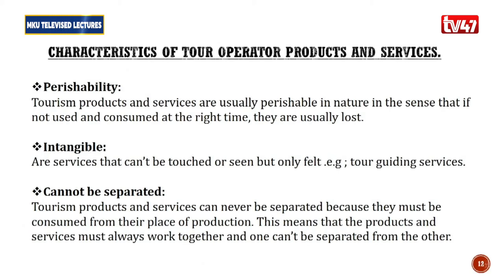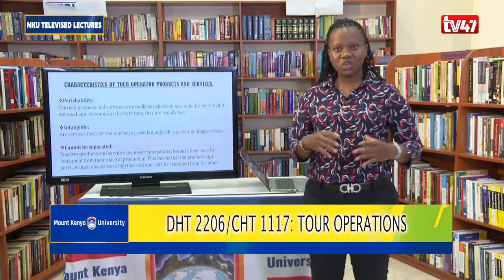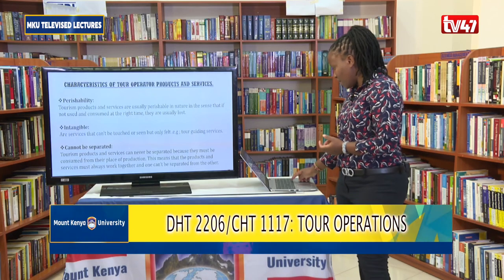Characteristic number three is inseparability. Tourism products and services can never be separated because they must be consumed from their place of production. The products and services must always work together and one cannot be separated from the other. A good example is a national park together with its flora and fauna — you cannot take Tsavo East National Park to Thika and leave the fauna behind. They have to be consumed together and at one place.